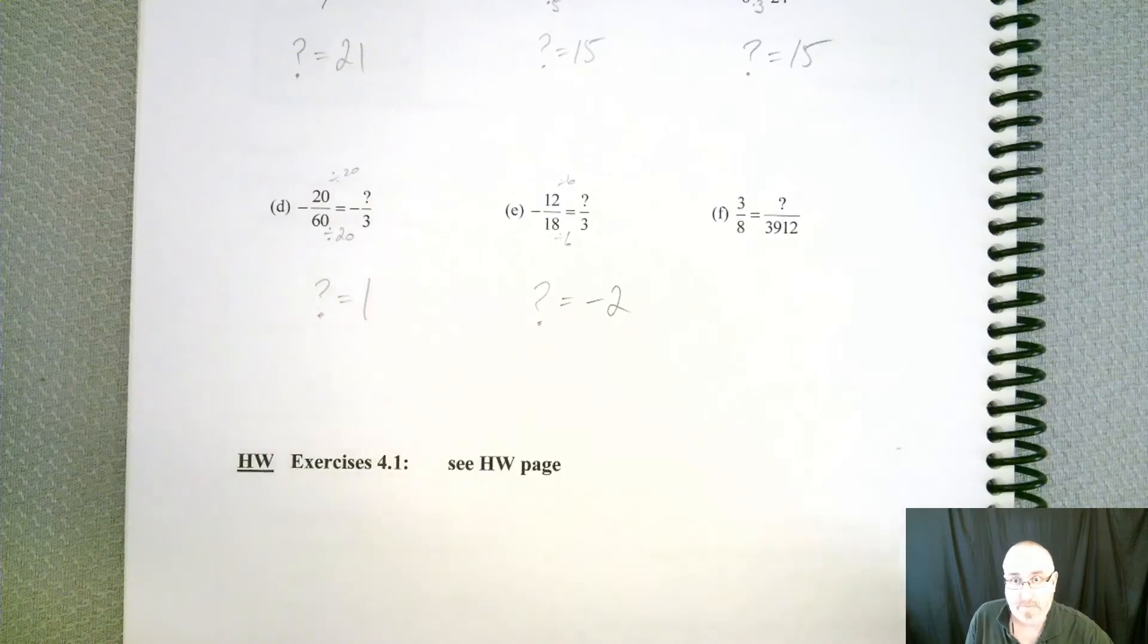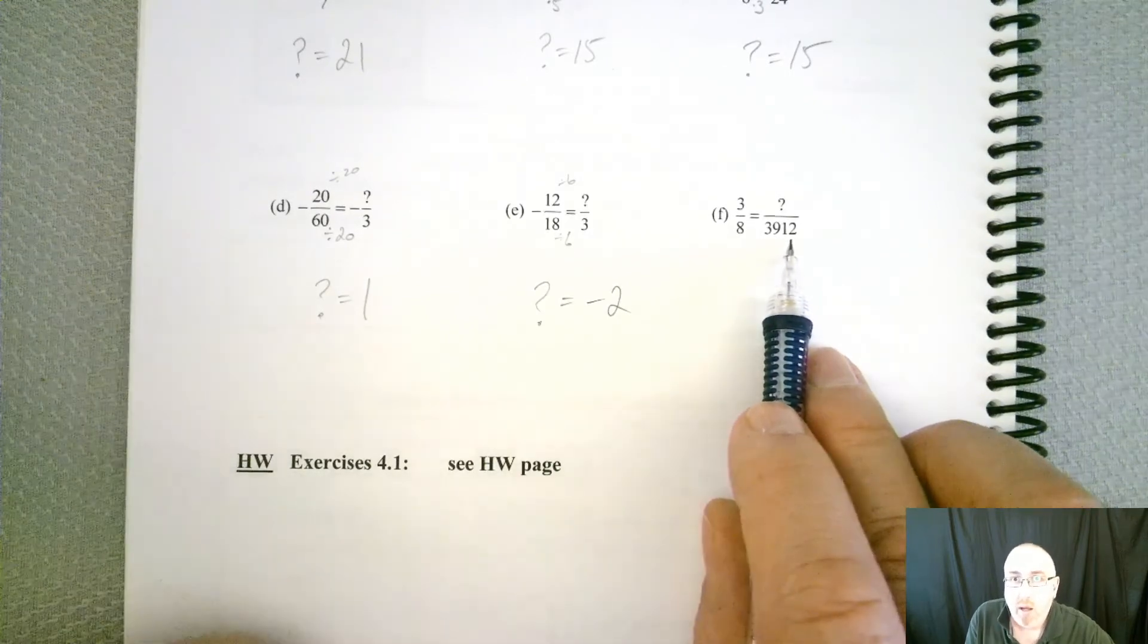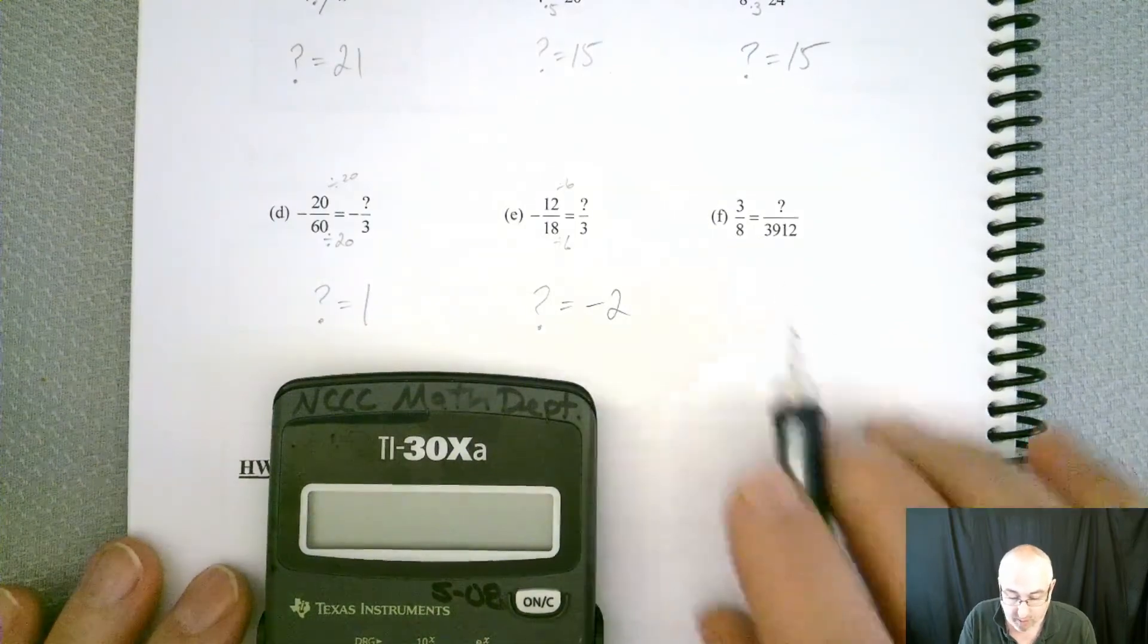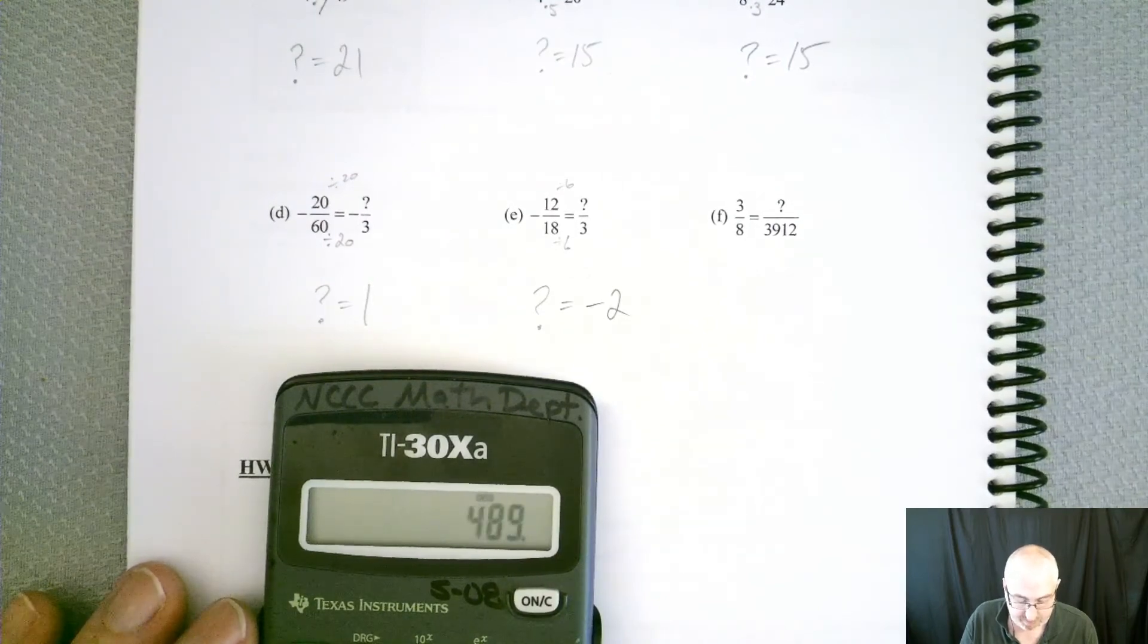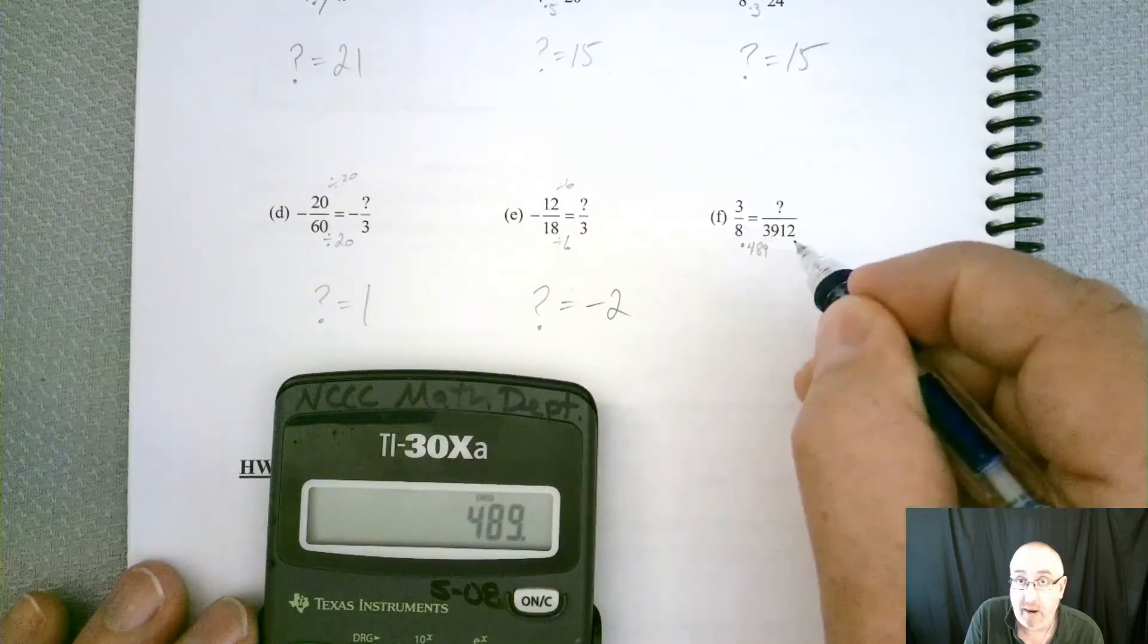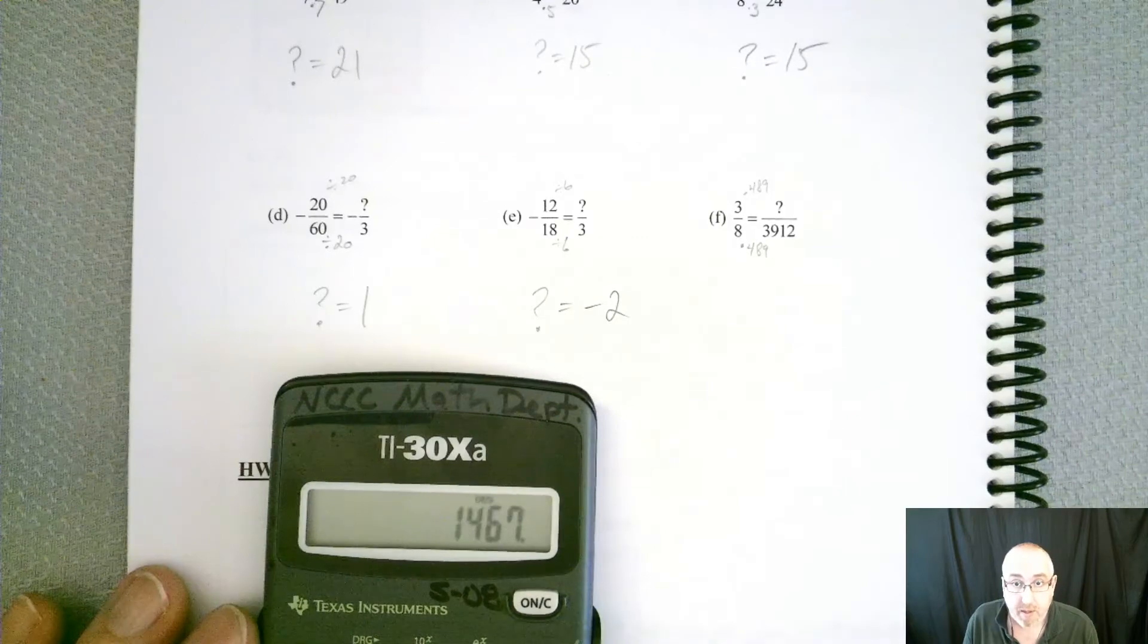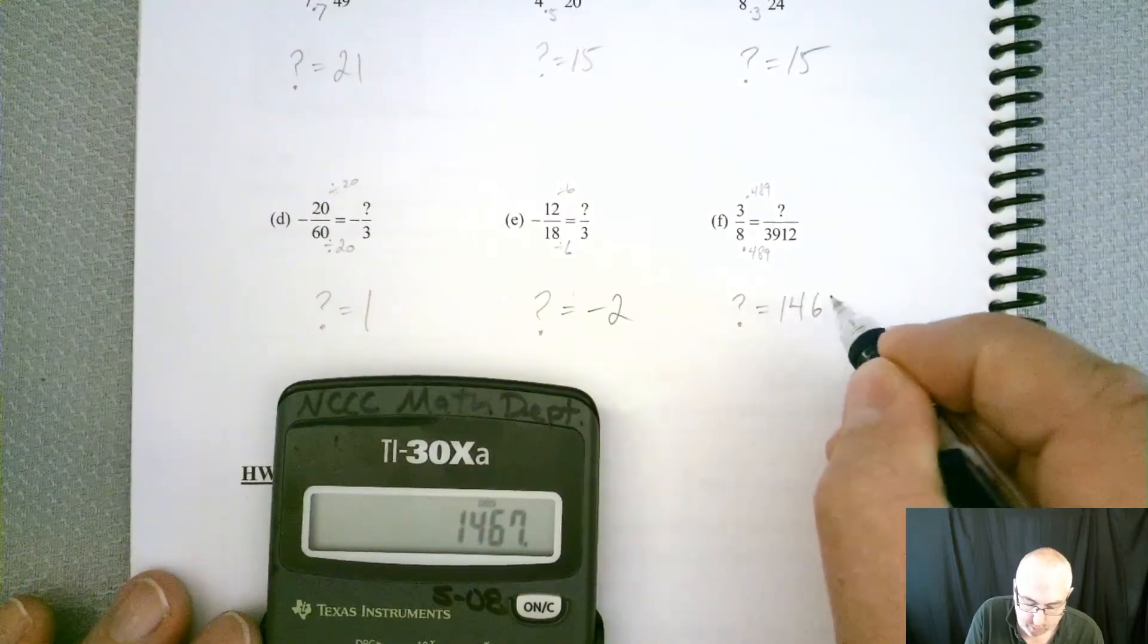Now, what about this last one? That's a big one. So we're going from 8 all the way up to 3,912. We've got to figure out what to multiply 8 by to get up to that. Well, we have our calculators. So how can we determine 8 times what equals that? Well, I can just divide that. If I divide it by 8, I get 489. So that tells me that I have to multiply by 489 to get to there, which means I've got to do the same thing to the top. So what's 489 times 3? Well, I can just multiply that times 3, and I get 1467. So that forces me to get a new numerator of 1467.